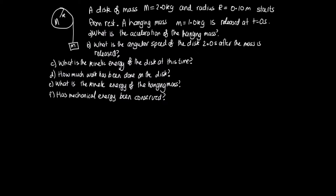To answer part a, we consider the forces on the hanging mass: the weight force mg pulling it down and tension T pulling it up. By Newton's second law: ma = mg − T. We also apply Newton's second law for rotation to the disk: I·α equals the net torque, which is caused by the tension force acting at radius r, giving I·α = rT.